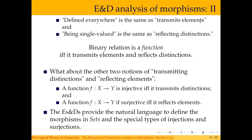That leaves the other two notions: transmitting distinctions means injective, and reflecting elements just means surjective. The elements-and-distinctions conceptual language is the natural language in which to define morphisms in the category of sets, and a lot of the other structure comes out of these basic definitions.